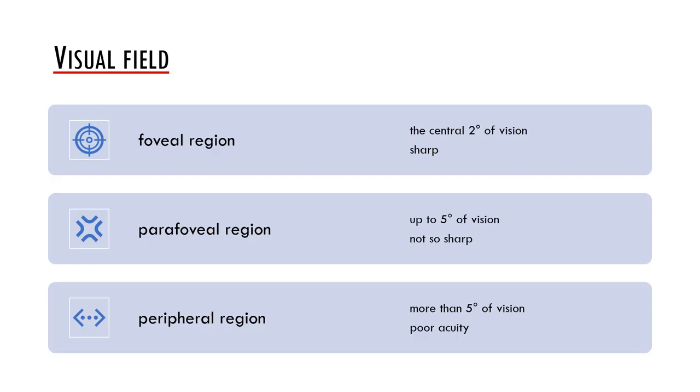The foveal region is delimited by the two central degrees of visual angle from fixation. This means that while fixating a text we can see sharply about seven to nine letters. The parafoveal region is defined as the region ranging from the foveal region up to five degrees of visual angle from fixation and it is related to a less sharp vision.